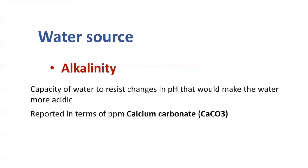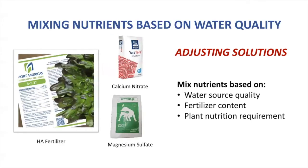How can you calculate to have your calcium levels in order when you have a water source and you are following a recipe? One option can be to treat the water with reverse osmosis. Another option can be to treat the water with acid. And another option includes adjusting nutrition based on your water source. The best fertilizers will allow you to mix nutrients based on your water source. When you are able to mix calcium nitrate and magnesium sulfate separately, you are able to adjust nutrition based on your water source.